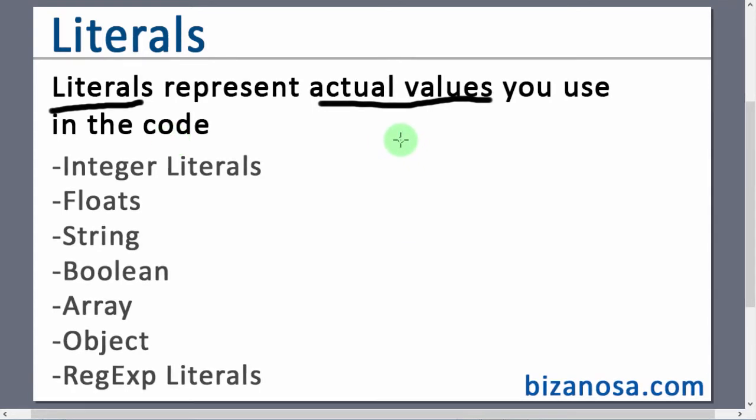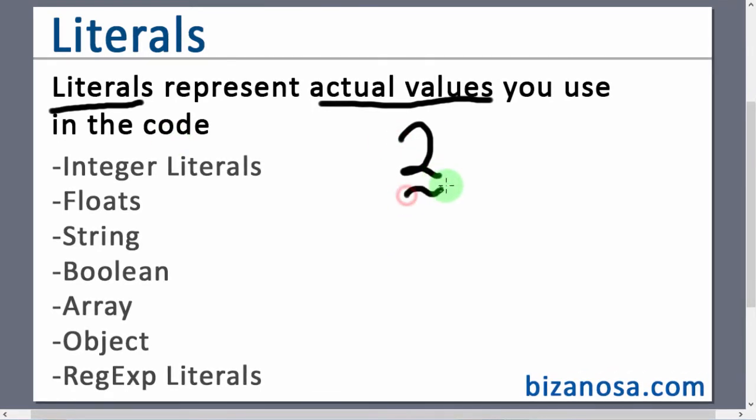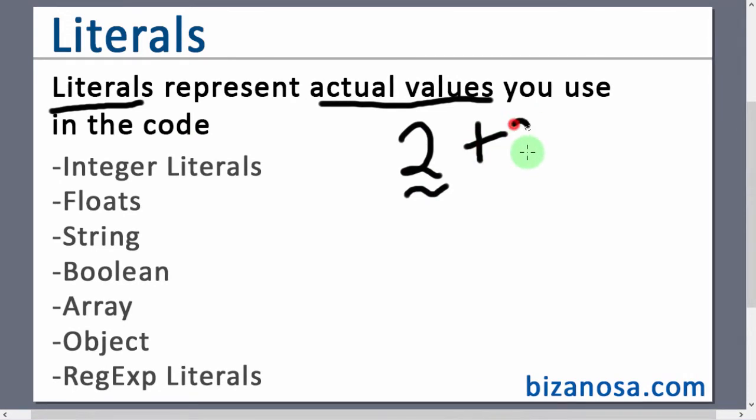For example, if you have a number like 2, this is an actual value. Maybe the statement says 2 plus 2. These are literals.